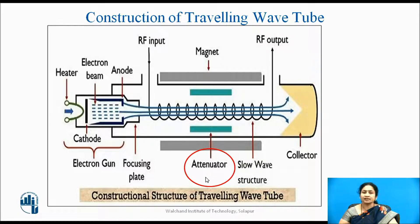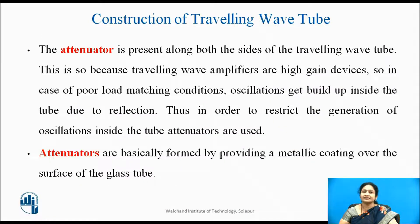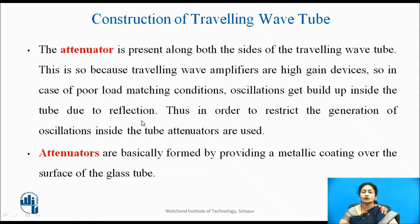The next part is the attenuator. The attenuator is placed on both sides of the travelling wave tube because travelling wave amplifiers are high-gain devices. In case of poor load matching conditions, there can be spurious oscillations. These oscillations build up inside the tube due to reflections. Thus, in order to restrict the generation of oscillations inside the tube, we require an attenuator circuit. This attenuator circuit is basically formed by providing a metallic coating over the surface of the glass vacuum tube.